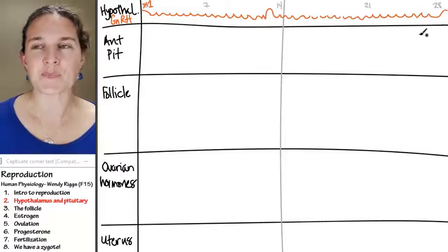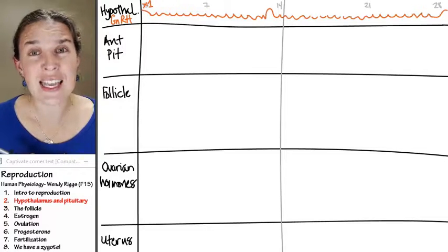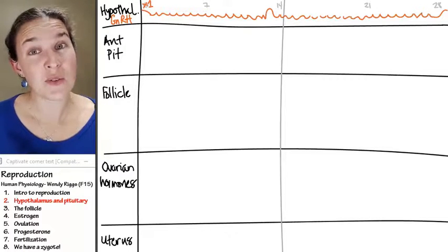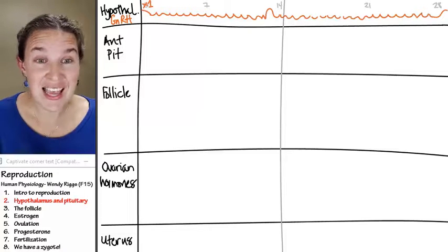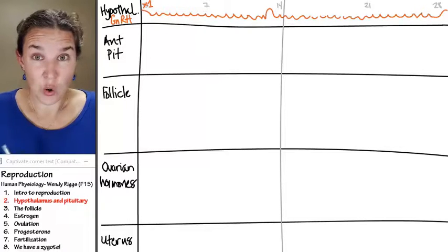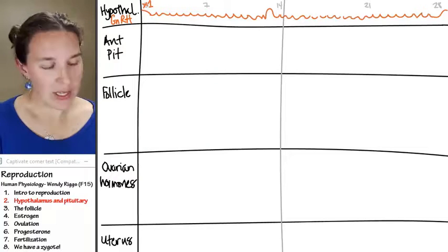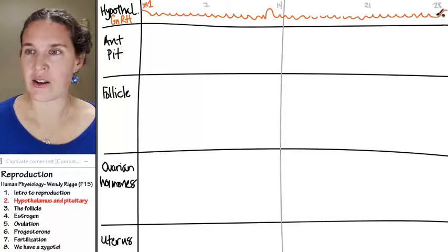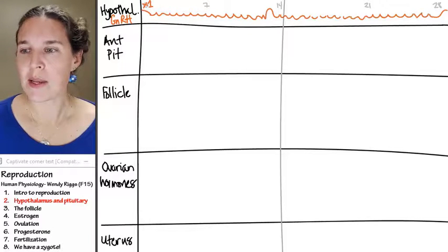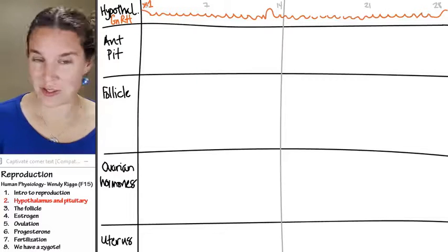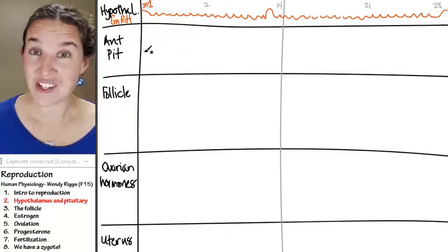Now think about this a second. We should see a rather similar pattern with our anterior pituitary hormones because Aunt Pitt is told what to do by gonadotropin releasing hormone. Now, it's not perfectly clean and clear, and that's because, of course, nothing is. But I'm going to pick my colors on purpose. And if you did happen to watch the anatomy lecture, then my colors match the anatomy lecture, which is rather odd but true.